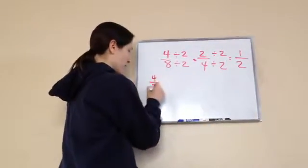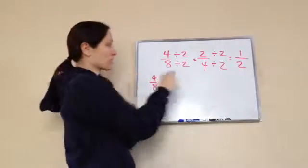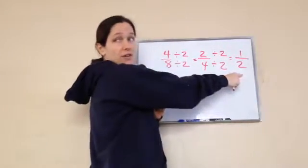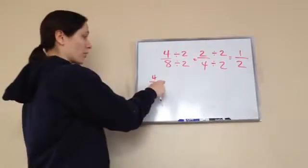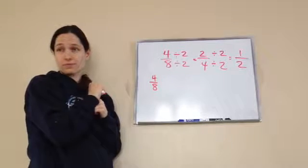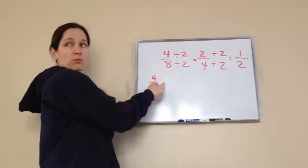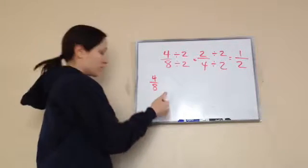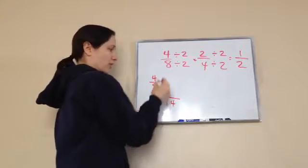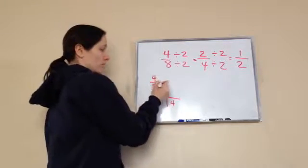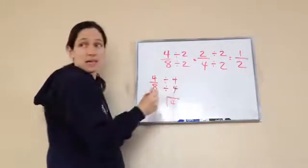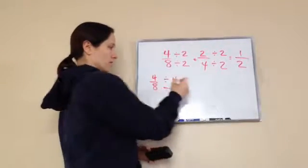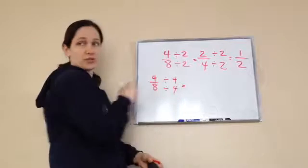Now they're wanting to teach you today how to take 4 eighths and just take one step to get to 1 half. Because we took two steps. We made it into 2 fourths and then into 1 half. They're just wanting us to go from here to here. So you're going to choose the largest number that you can choose that will go into both 4 and 8. We're going to choose 4 instead of 2 both times. You have to always divide by the same number to reduce.